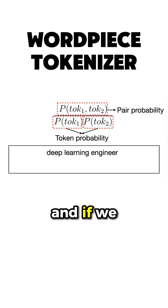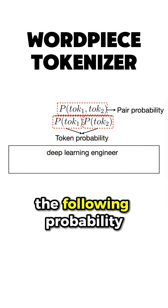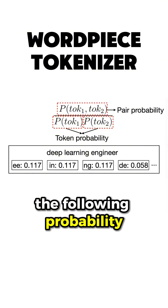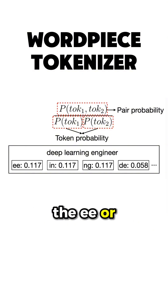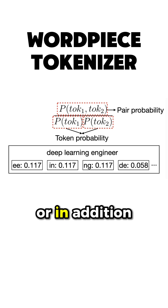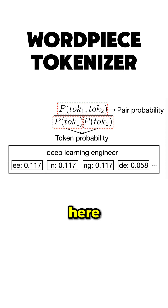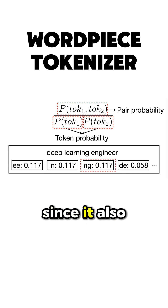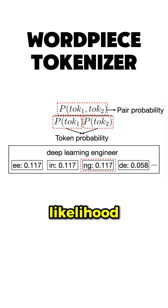And if we were to compute that, we would obtain the following probability, and pick either the EE or INC pairs or, in addition to BPE encoding, due to the way probabilities work here, the NG pair, since it also has the highest likelihood.